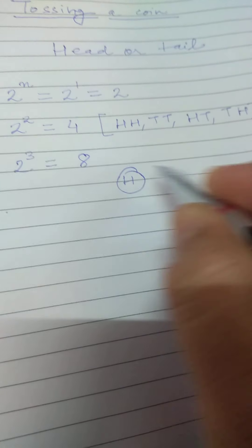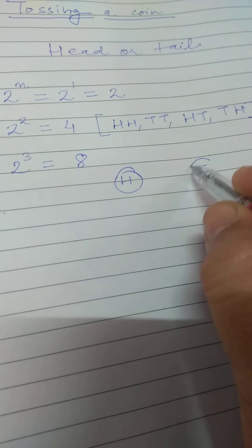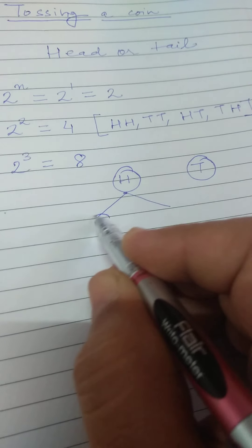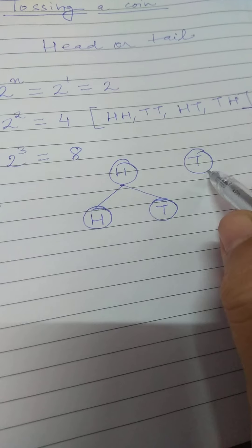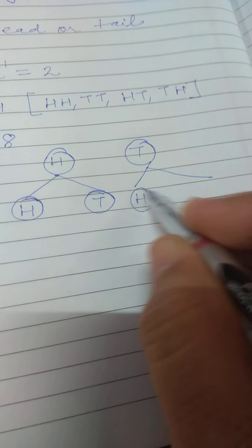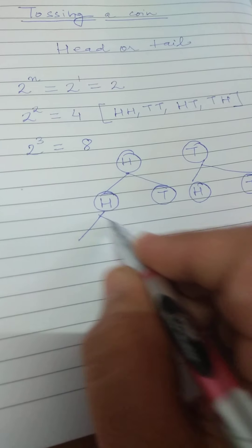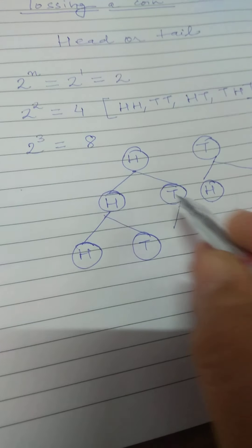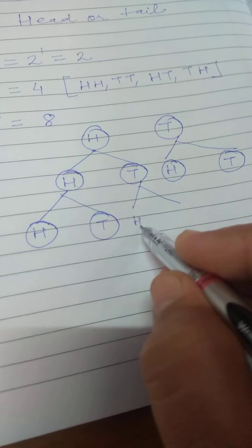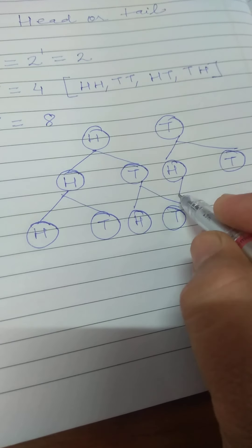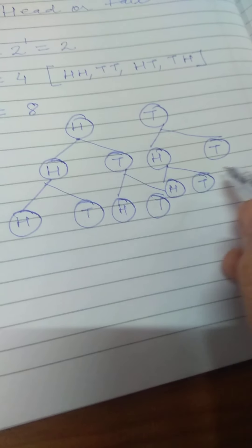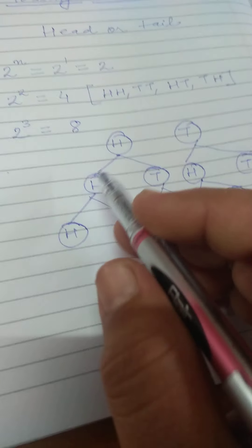In the first coin you may get head or tail. After getting head in the first coin, you can get head or tail in the second coin. After tail in the first coin, you can get head or tail in the second coin as well. Then in the third coin, after each combination from the first two coins, you can again get head or tail, giving us all the branches of the tree.